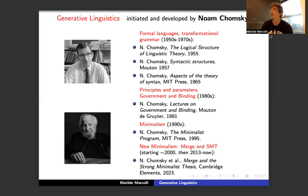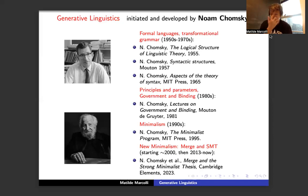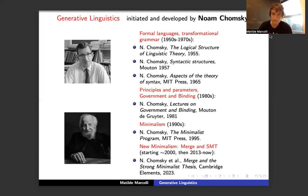The next main step in the development of generative linguistics came with the theory of principles and parameters — government and binding in the 1980s — which among other things introduced the idea of syntactic parameters, providing a way of comparatively studying syntax across different human languages.